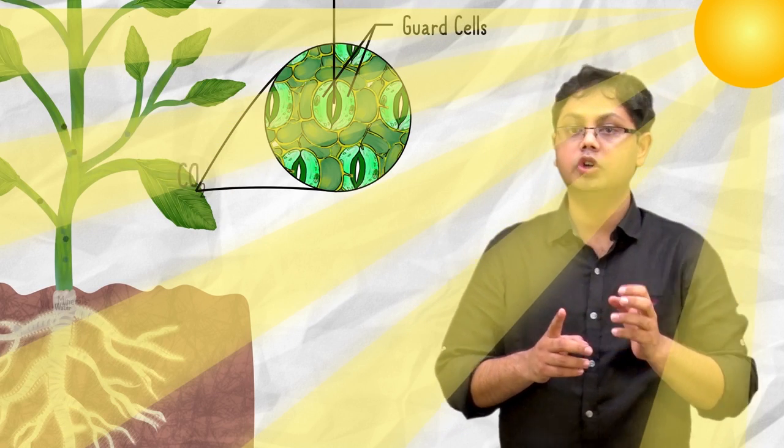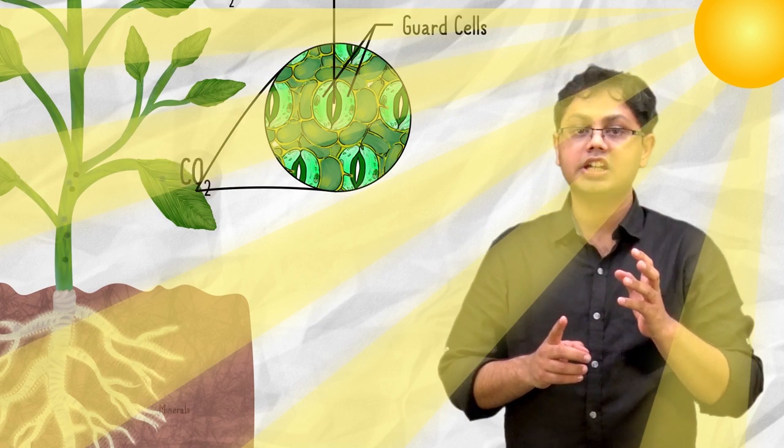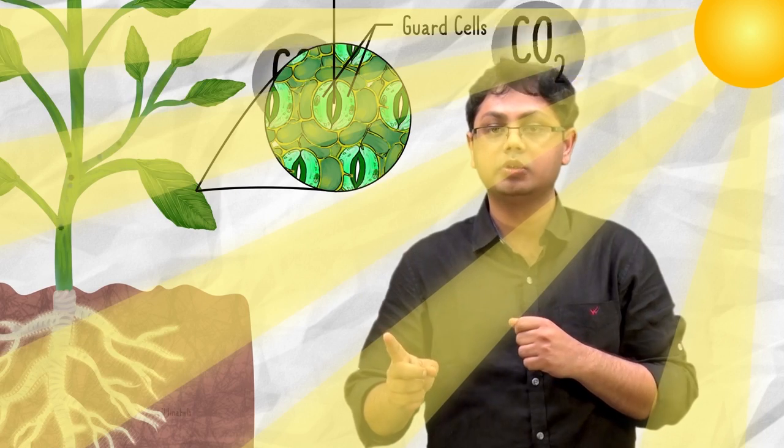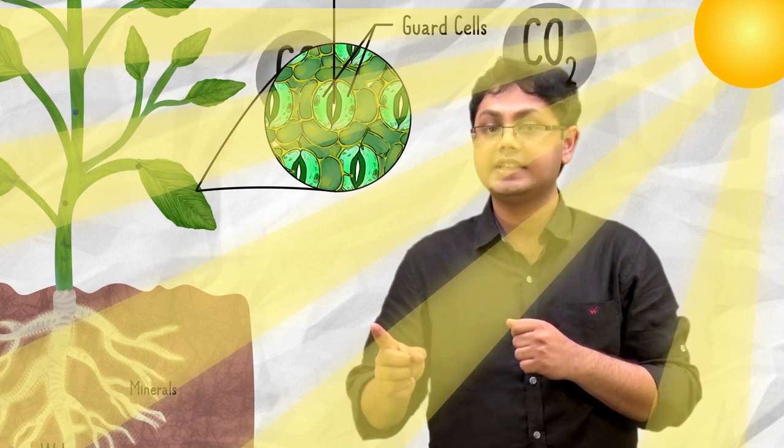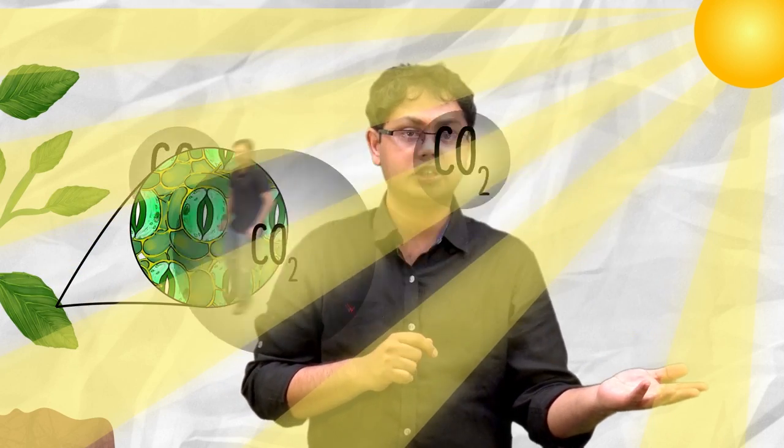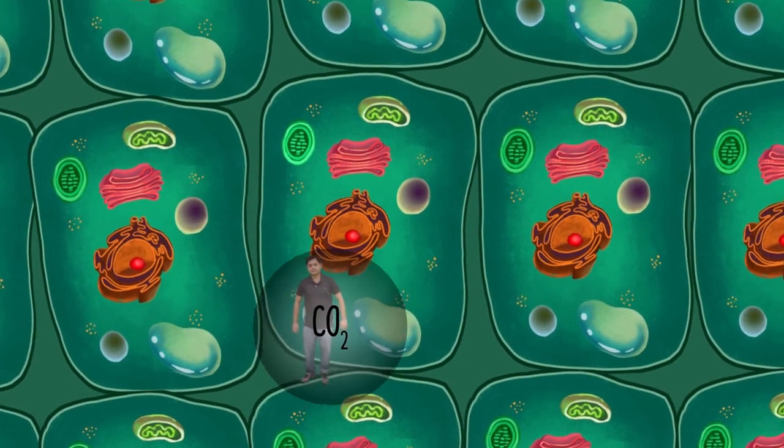Now, we can go microscopic. Let's start looking at the cellular level. Let's follow the carbon dioxide molecule through the stomata and see where it goes. Mr. Winion is going to help me out here. Now, we are entering the plant cell.